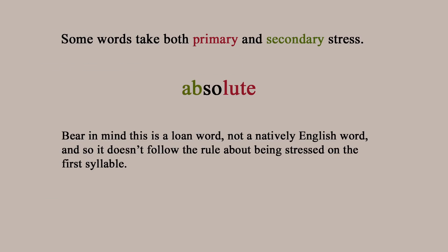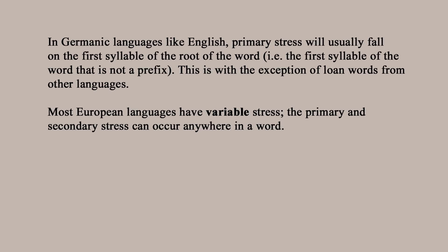In English you can have primary and secondary stress, like in the word 'absolute' — which has a secondarily stressed syllable, an unstressed syllable, and then a primarily stressed syllable. But other European languages more often have variable stress, which means the stress can come anywhere in a word, although this will usually be governed by rules. So, what's the point of having variable stress if languages can clearly do without it? Well, it's just another way of differentiating words from each other and adding meaning.